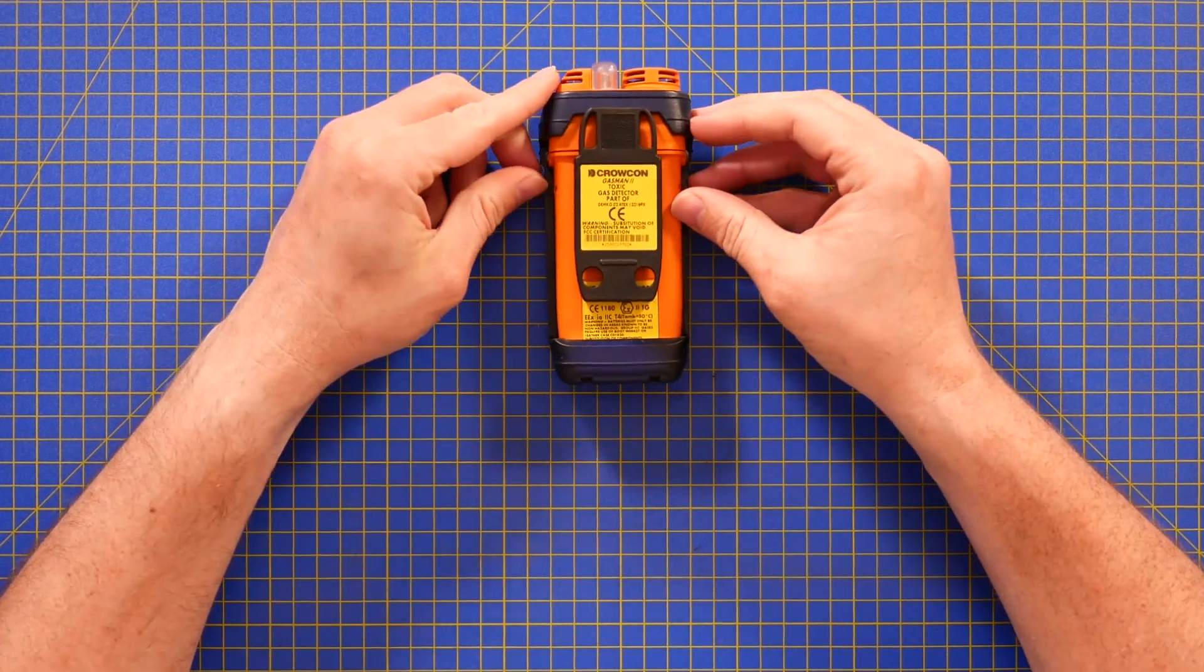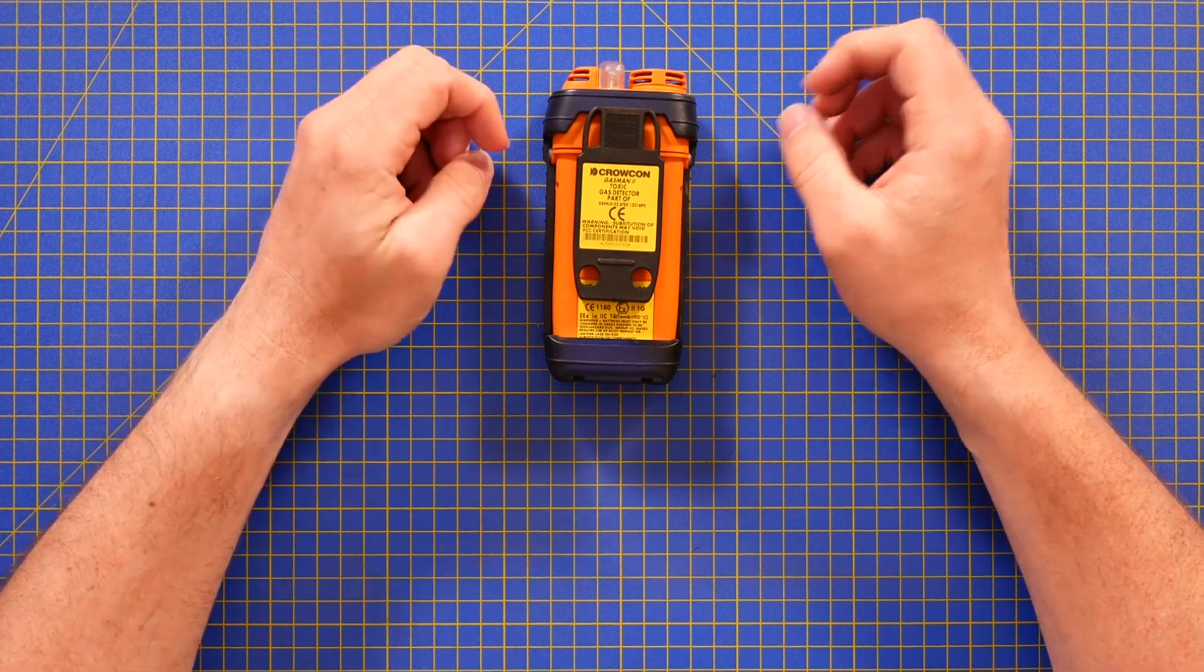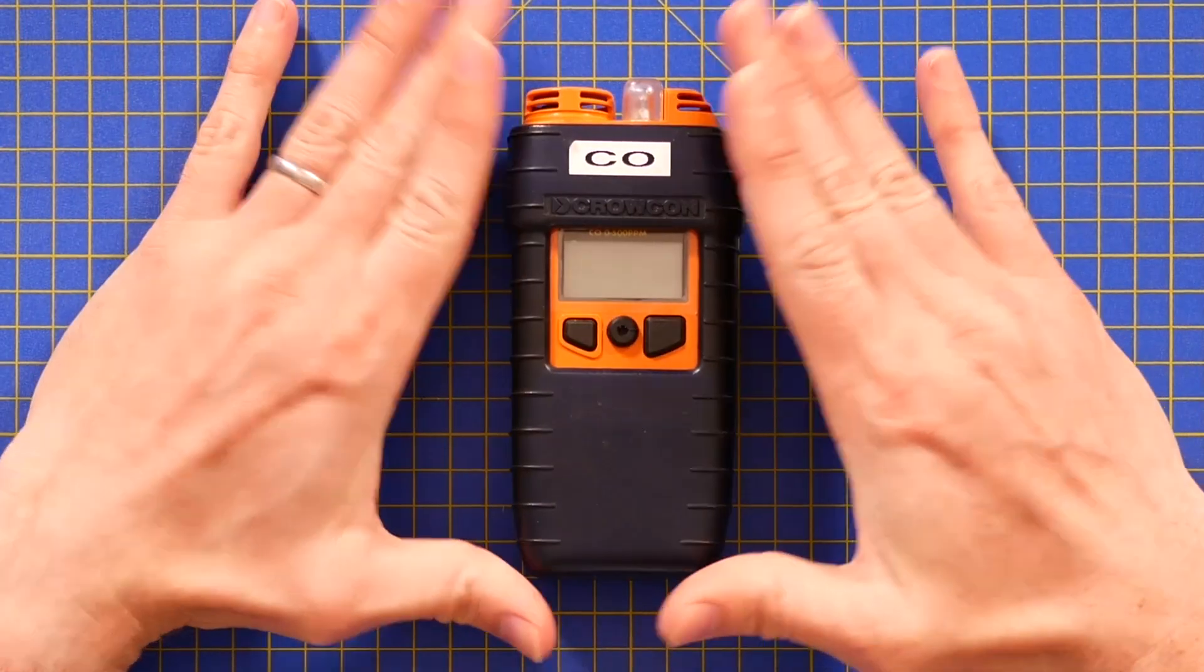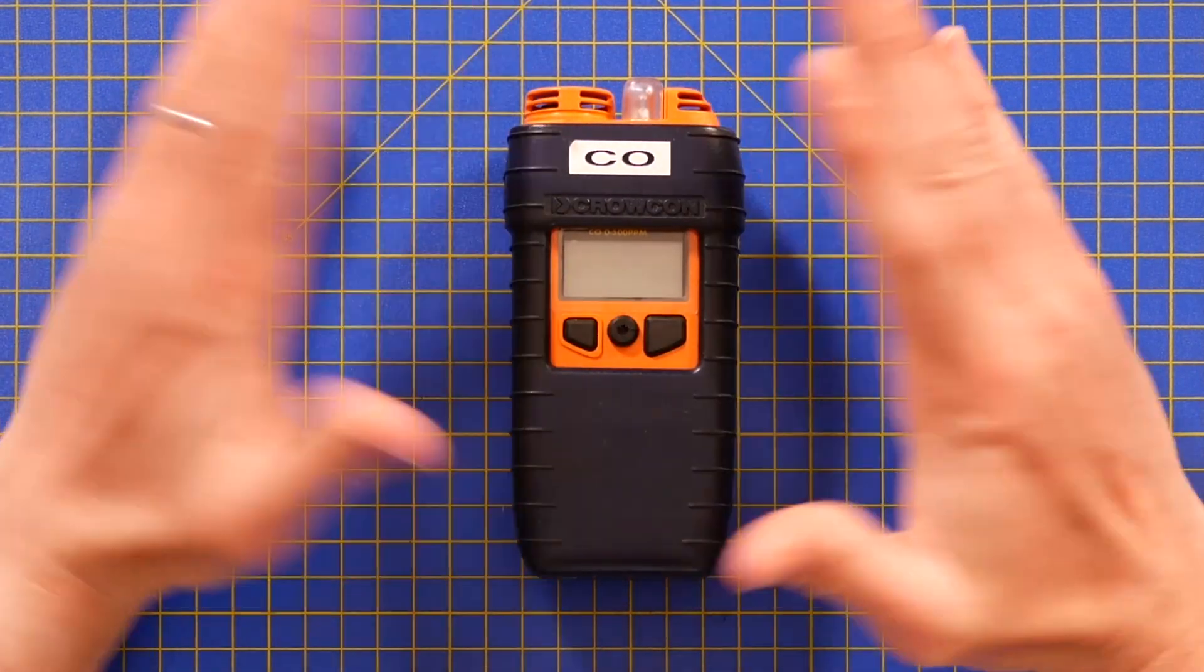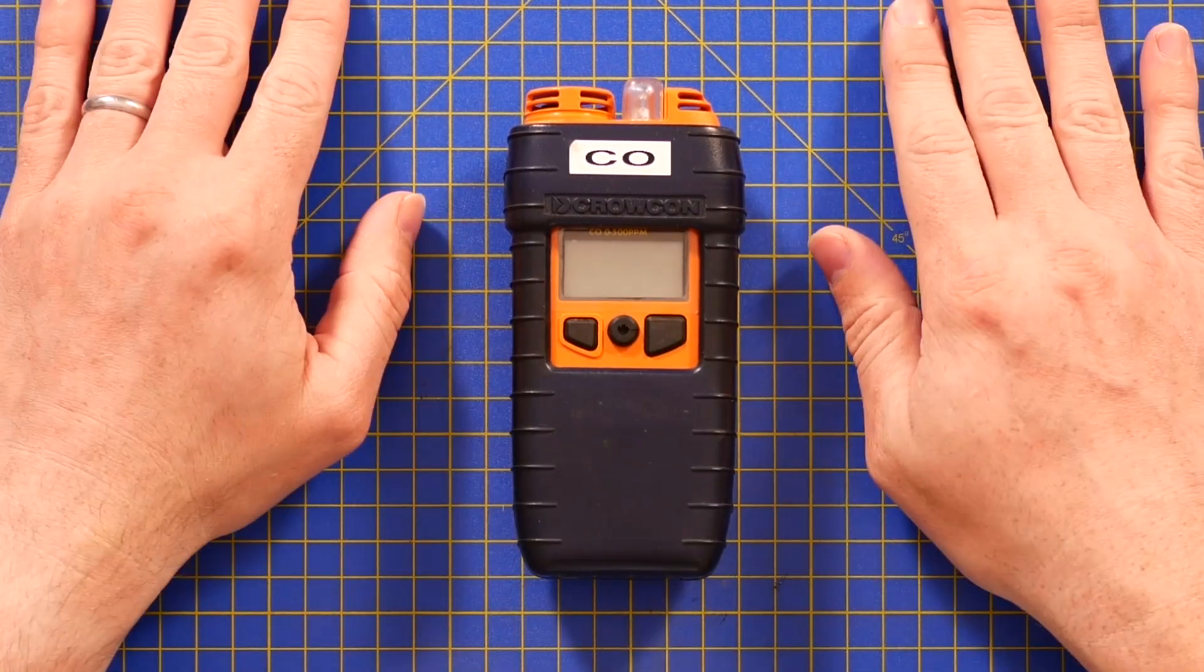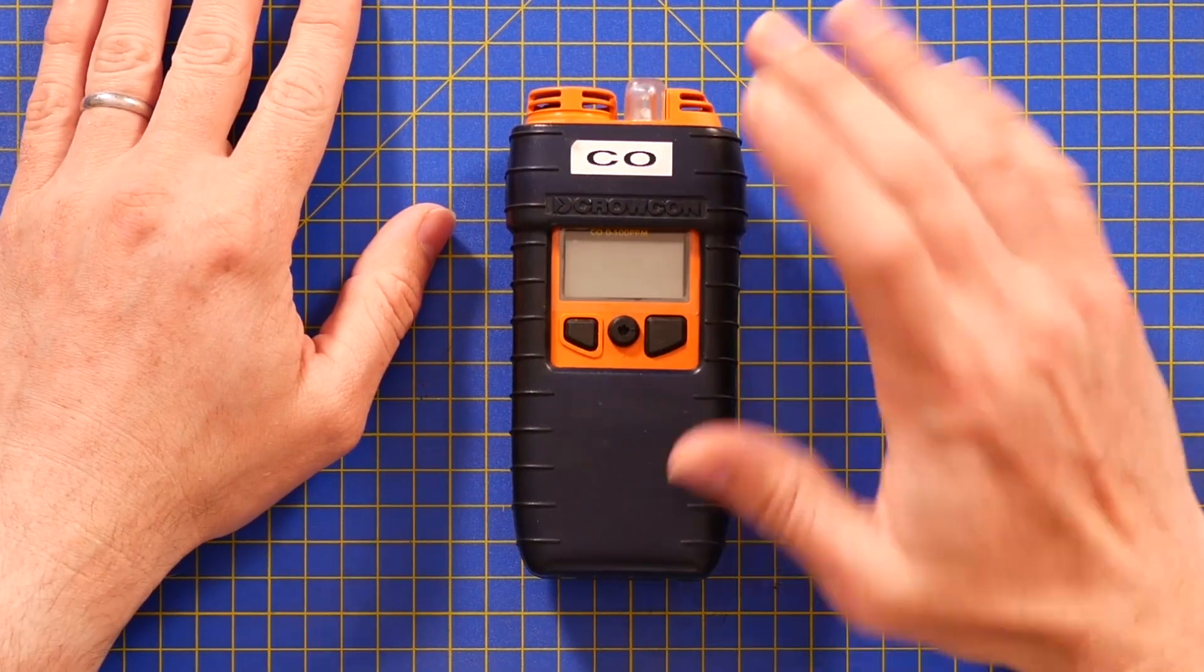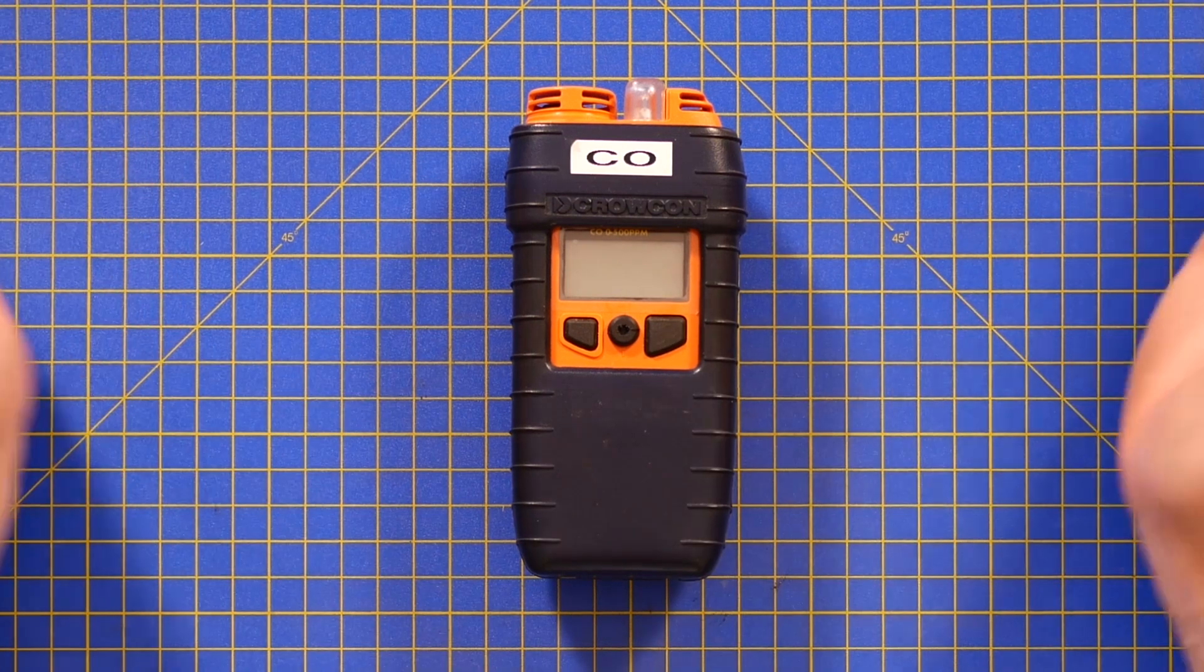This particular one is a Crowcon Gasman 2 carbon monoxide. There's a whole range of these for different gases, different atmospheres. This particular one is carbon monoxide. This one, I think, is from about 1999. Let's get into it.